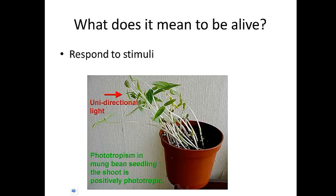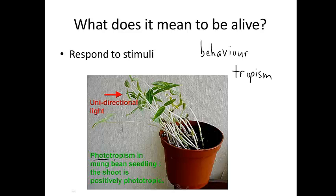Another characteristic of living things is that they respond to stimuli. If something responds quickly to a stimulus — like you put your hand on a hot stove and pull it away — that would be called behavior. When something responds more slowly to a stimulus, such as a plant growing towards the light, that's called tropism. In this particular case, if you want a fancy new word, it would be phototropism. Photo means light, and tropism is this slower response to a stimulus.